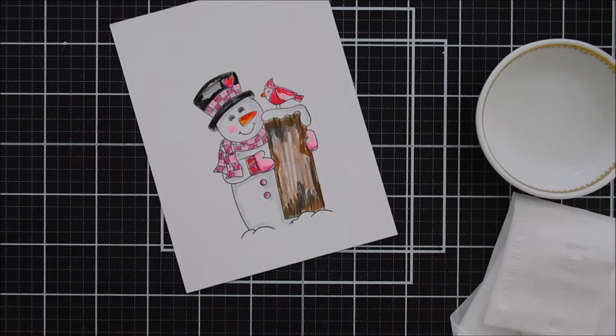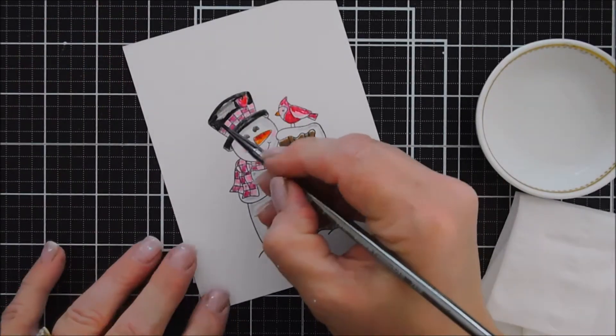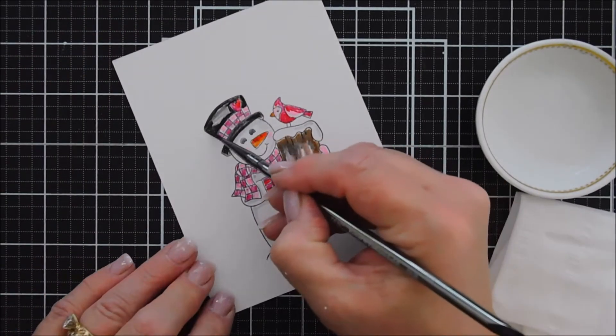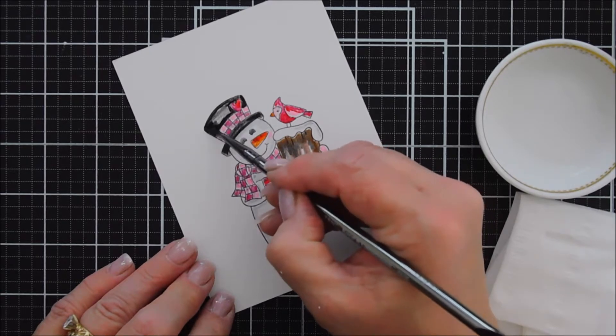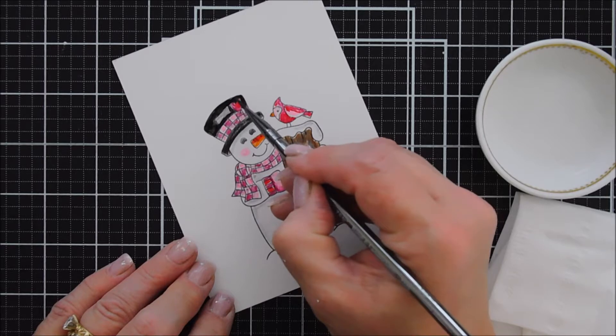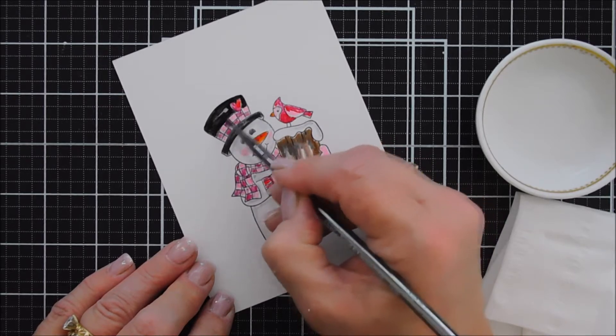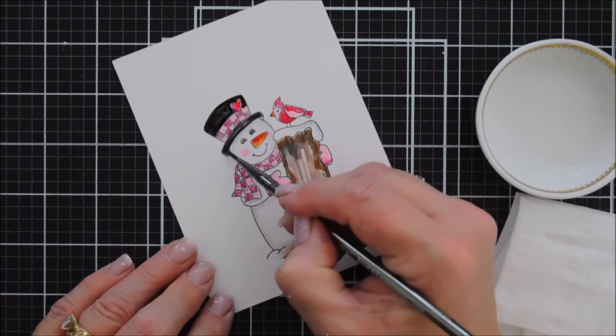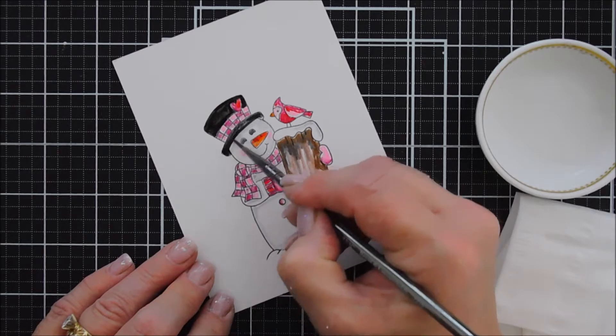After we have our color down, now is the fun part. I had a number four paintbrush. I think I'm going to switch it out for a number two, which is smaller because there's some intricate details even in the checkered on the hat in the scarf. But this is the fun part. All you do is dip it in water. I just used my distress sprayer, sprayed a little bit of water in my container here. You don't need much. And then you just spread out the color. Easy peasy.